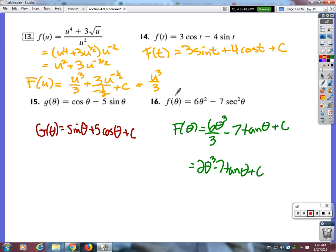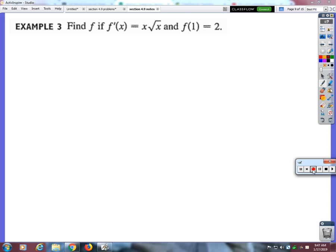Which equals u to the third over three. Can we do the divide by negative one-half in our heads? Times by negative two. So that would be negative six u to the negative one-half plus c. Okay. Of course.